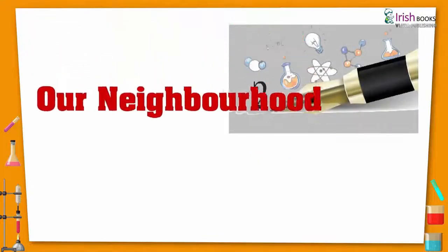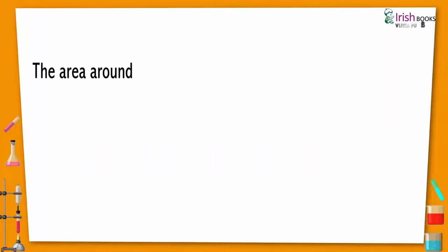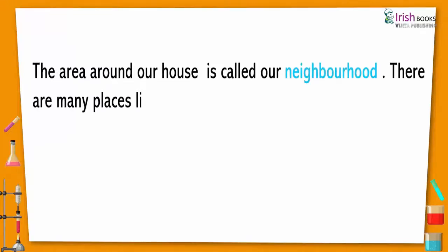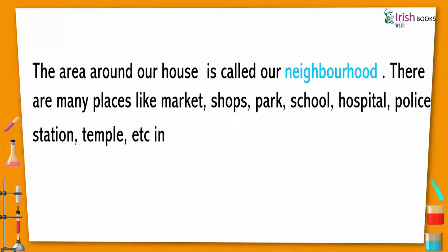Chapter 2: Our Neighborhood. The area around our house is called our neighborhood. There are many places like market, shops, park, school, hospital, police station, temple, etc. in our neighborhood.